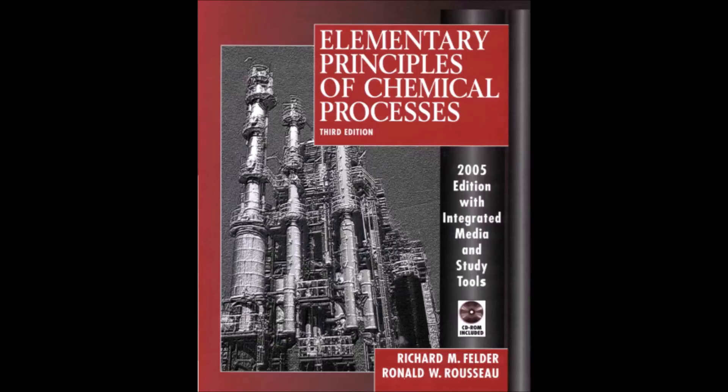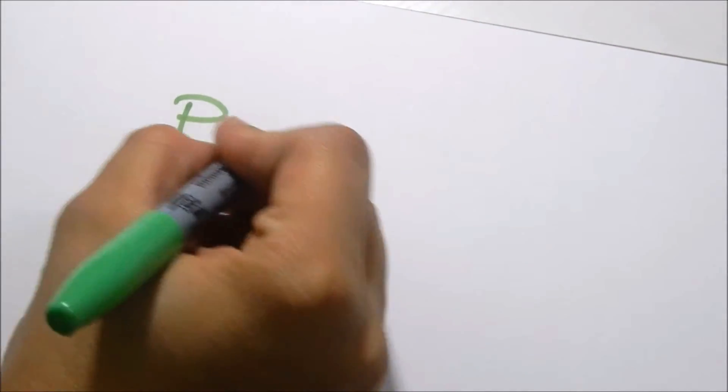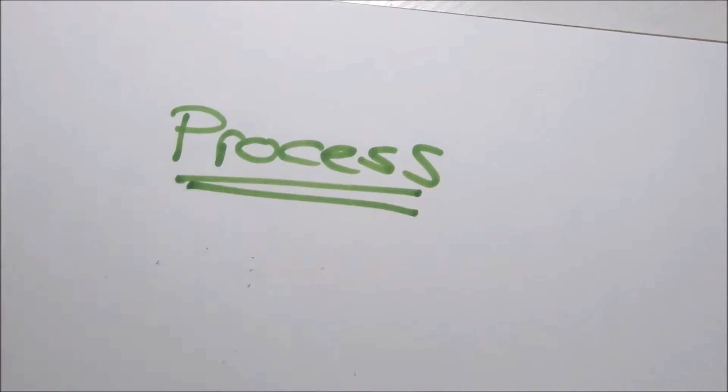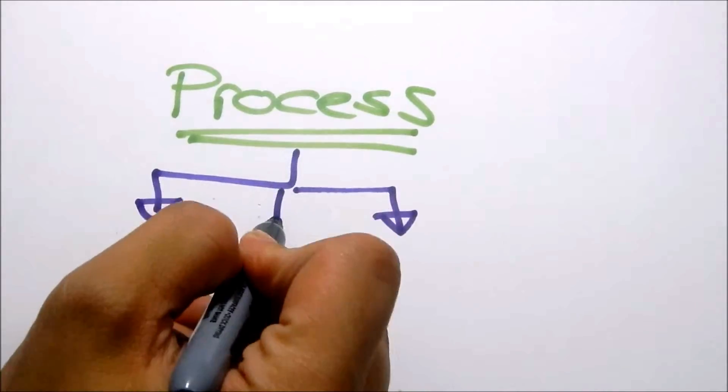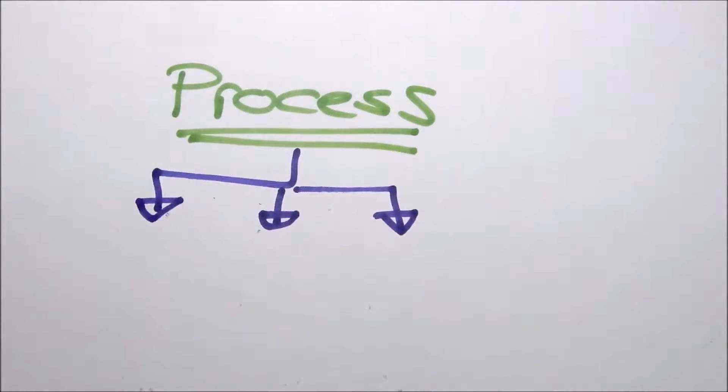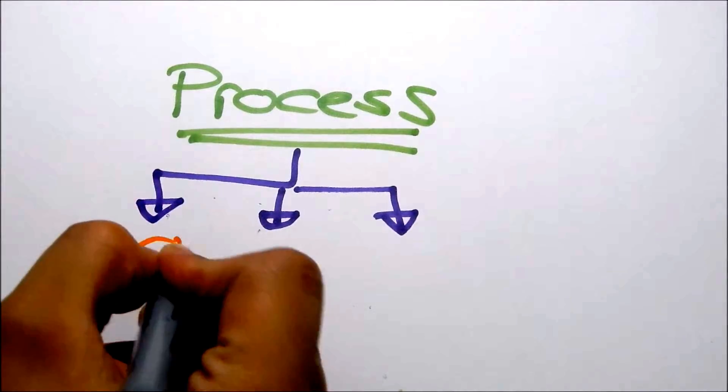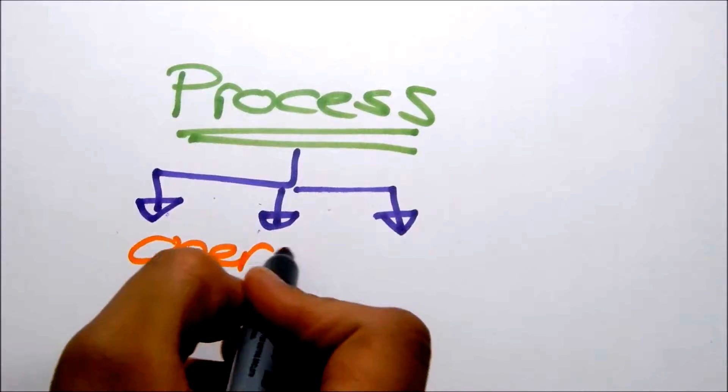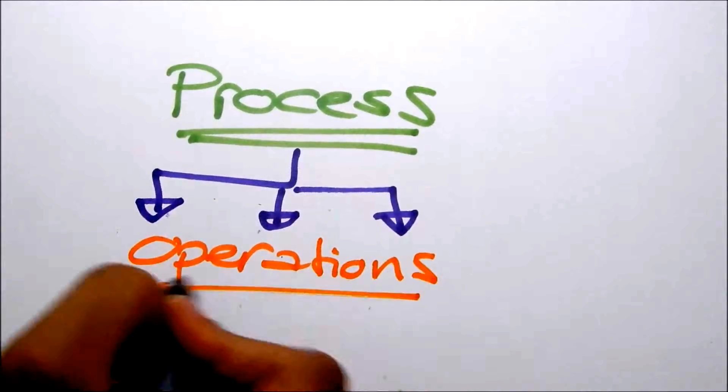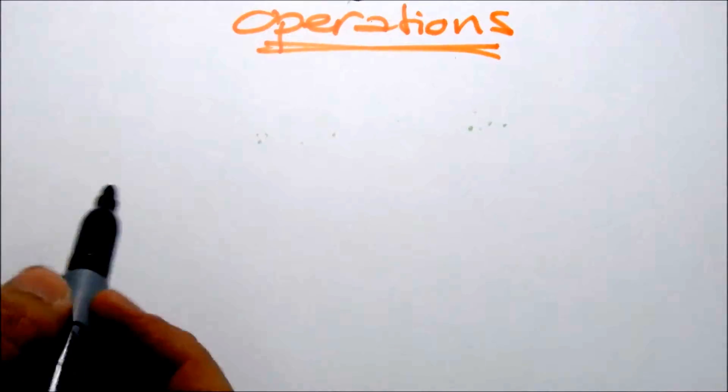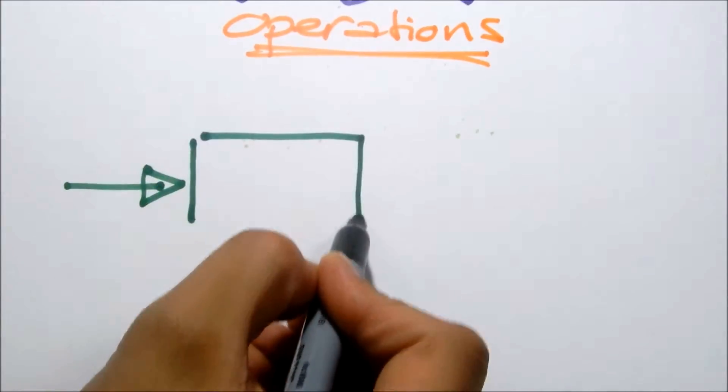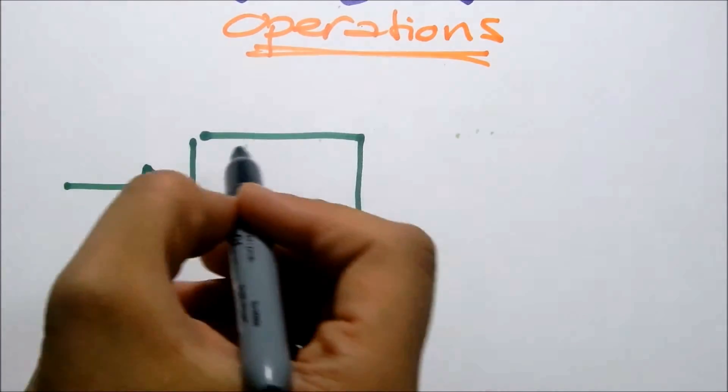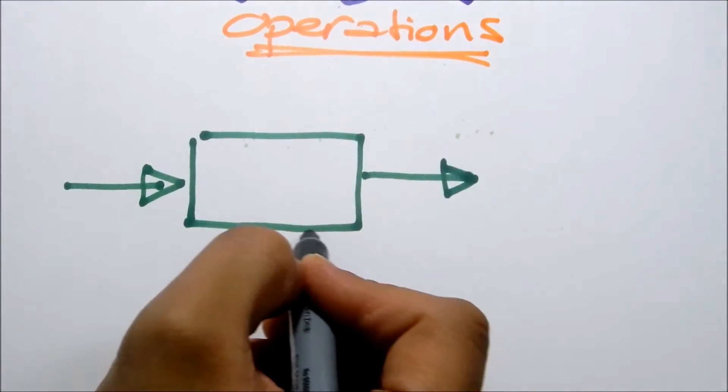This is the book that we're going to be using. First, we're going to be starting off by explaining some definitions. Under the process, what do we have? We have a couple of series of operations to achieve an objective. Here is an example of a simplified, absolutely simplified process.